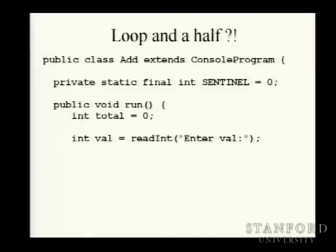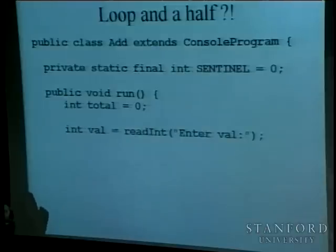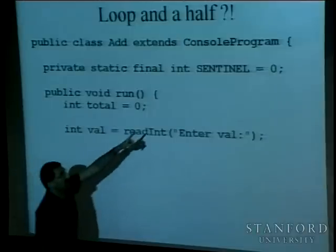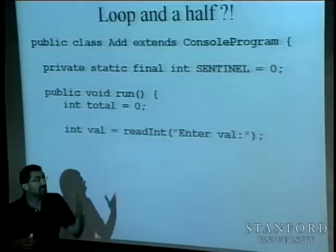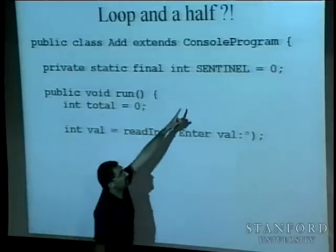In programming this happens fairly commonly. We call it the loop and a half — because you want to do half of the loop at least once. Let's say we want a program that reads numbers from the user until they enter zero to stop, and computes the sum. We'll use a sentinel value — a constant that signals the user is done entering values.